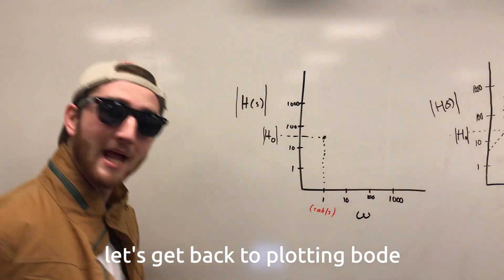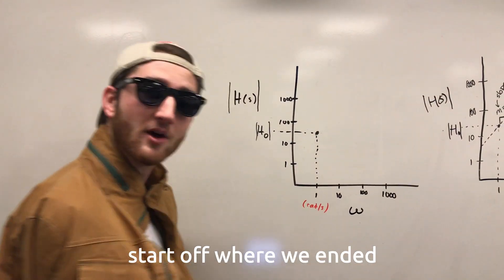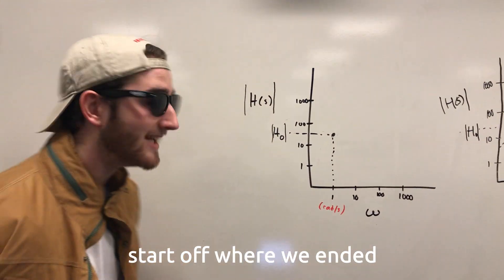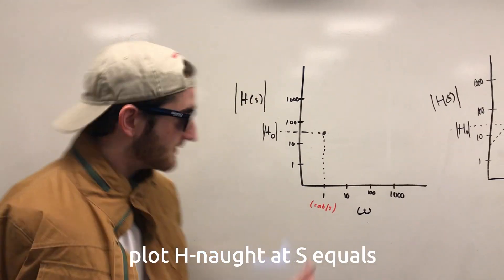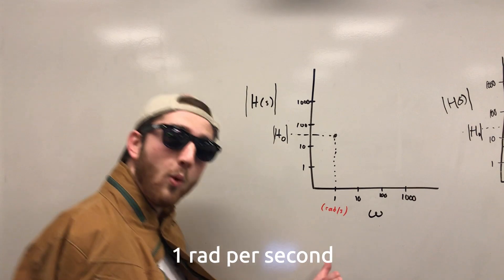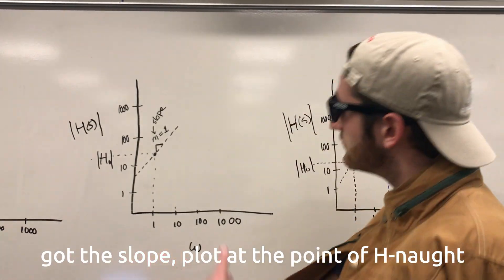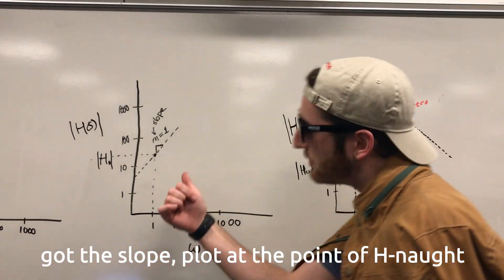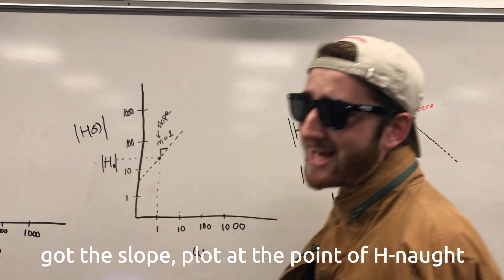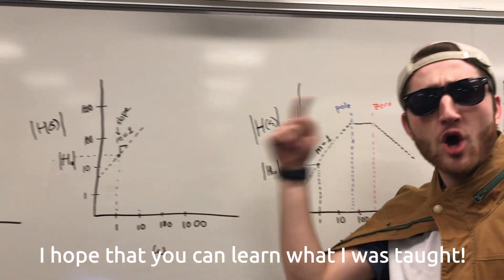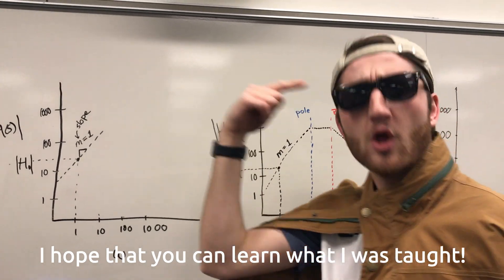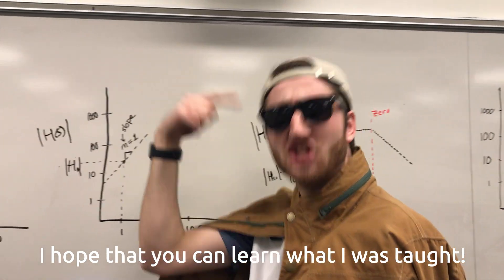Let's get back to plot and Bode. We start off where we ended: H-naught at x equals 1 rad per second. Got the slope plot at the point of H. I hope that you can learn what I was taught.